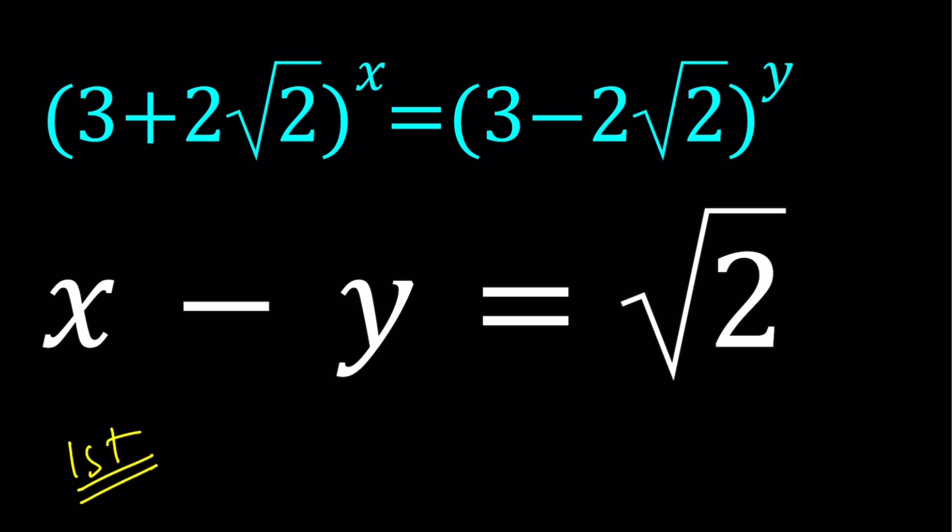One thing to notice here, which is very important for solving these kinds of equations: think about this expression. Isn't that quite complicated, like (3+2√2)^x? We can use the binomial theorem, but I don't think that's going to be helpful because you're going to have to deal with combinatorics, so many coefficients, and that's going to get real messy.